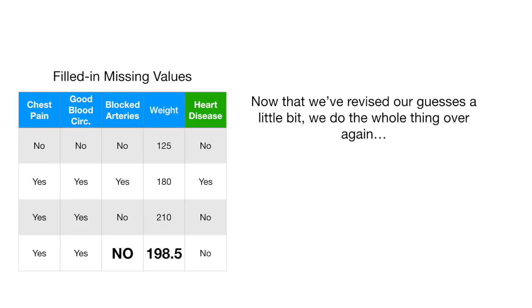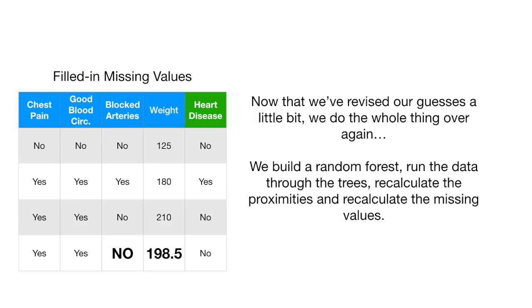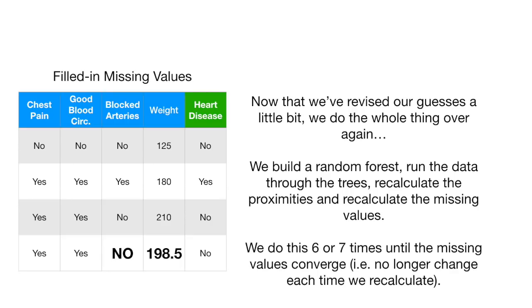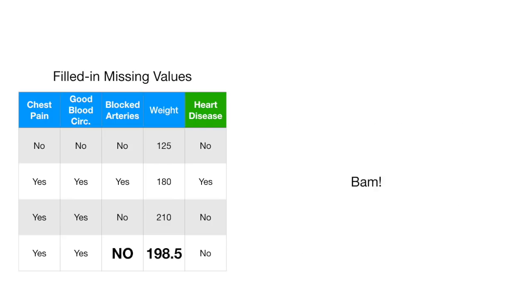Now that we've revised our guesses a little bit, we do the whole thing over again. We build a random forest, run the data through the trees, recalculate the proximities, and recalculate the missing values. We do this six or seven times until the missing values converge, i.e. no longer change each time we recalculate. BAM!